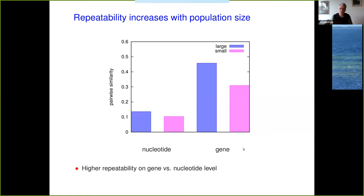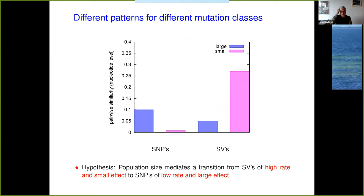One conspicuous pattern: there is more repeatability at the gene level versus the nucleotide level, which is expected because it is a coarser-grained scale. Repeatability is also stronger in large than in small populations — also expected because more clonal interference makes evolution more deterministic. The really striking and unexpected finding, however, is that comparing similarity for different mutation classes, repeatability in the large populations is driven by SNPs — a few SNPs occur over and over again — but in the small populations it is much more strongly driven by structural variants. This means that different classes of mutations are important for adaptation in small versus large populations.